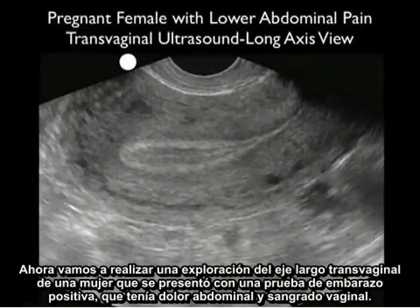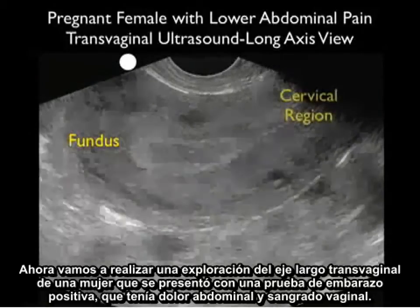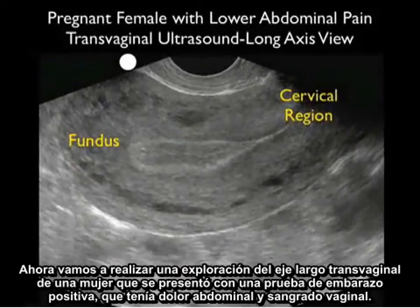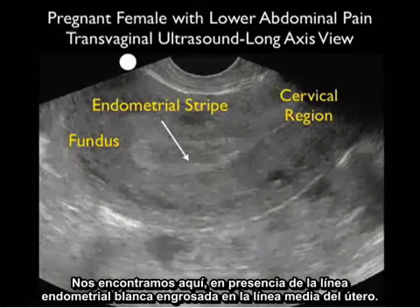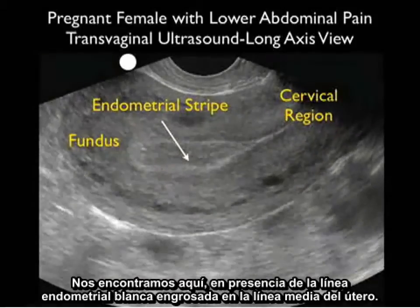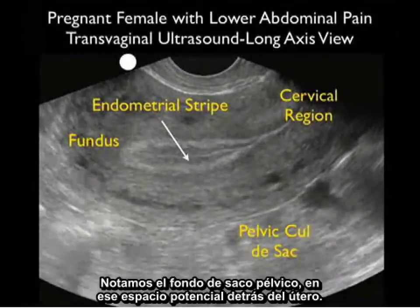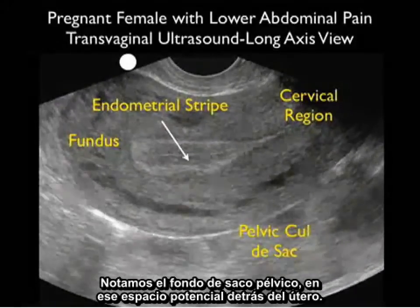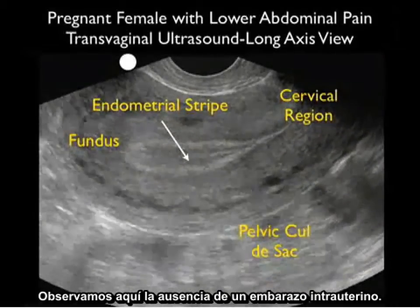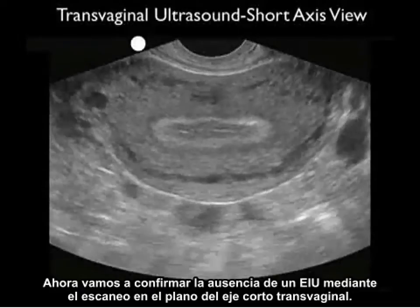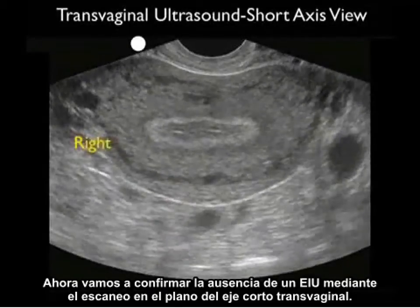Now let's review a transvaginal long axis scan from a woman who presented with a positive pregnancy test, lower abdominal pain, and vaginal bleeding. Notice the fundus shown here to the left and the cervix to the right. We see the presence of a thickened white endometrial stripe in the midline of the uterus. Notice the pelvic cul-de-sac — that potential space posterior to the uterus. Notice the absence of an intrauterine pregnancy. We'll confirm the absence of an IUP by scanning in the transvaginal short axis plane.